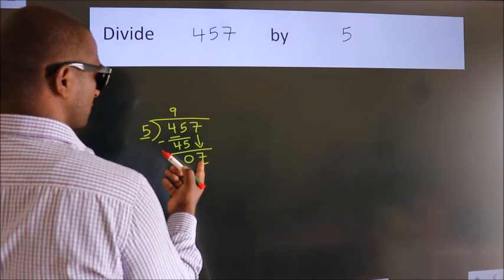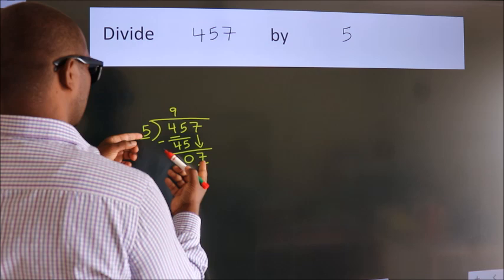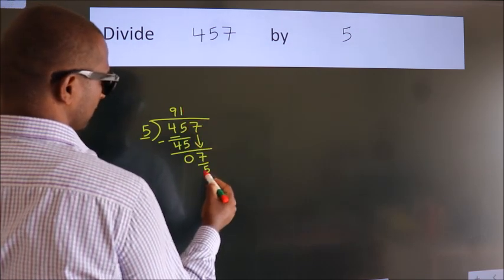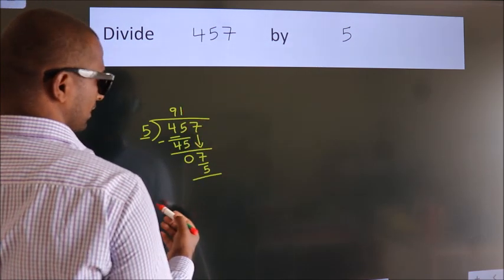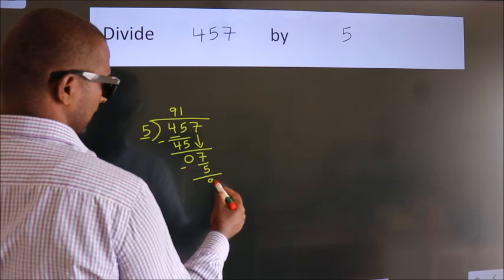A number close to 7 in the 5 table is 5 once, 5. Now we subtract, we get 2.